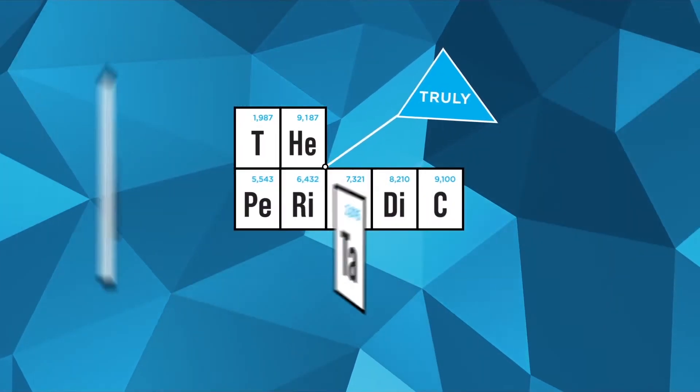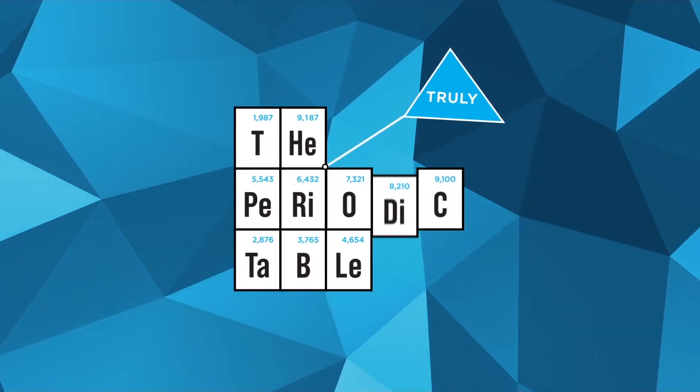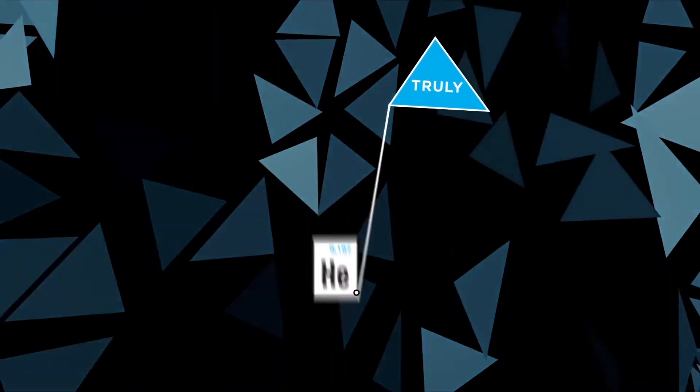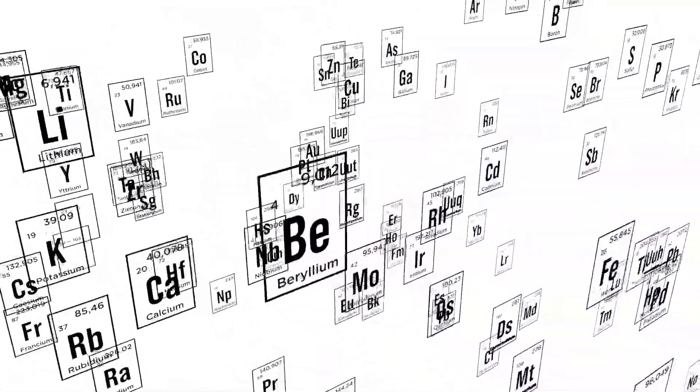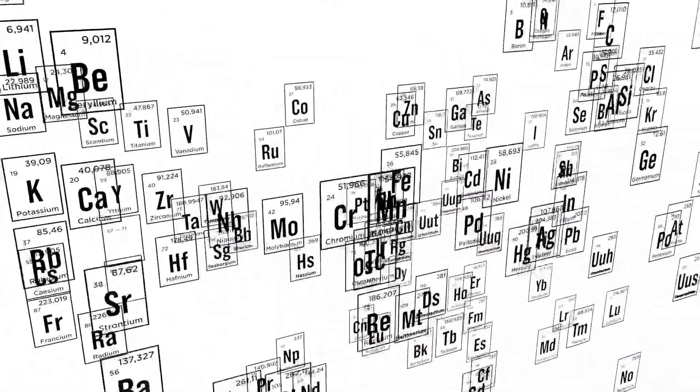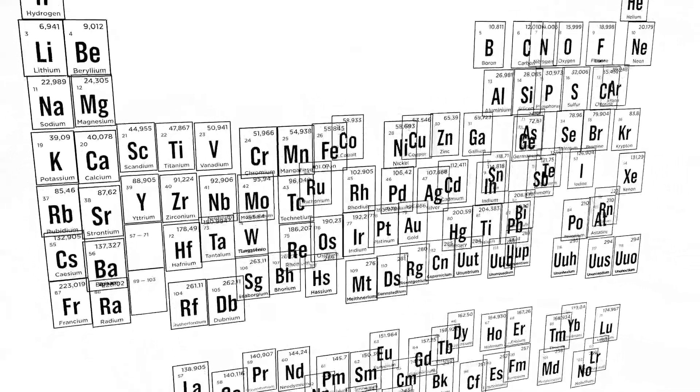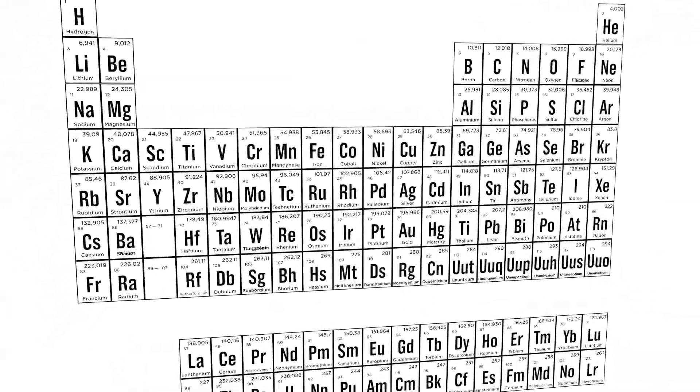The periodic table is this chart with a strange shape, with letters and numbers, neither a square nor a rectangle, with such a characteristic, unmistakable shape.